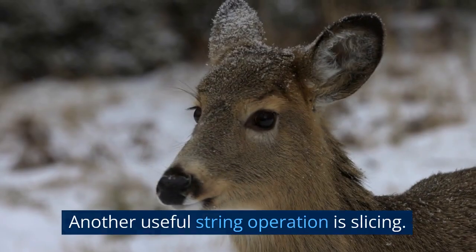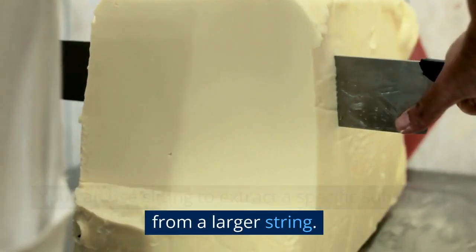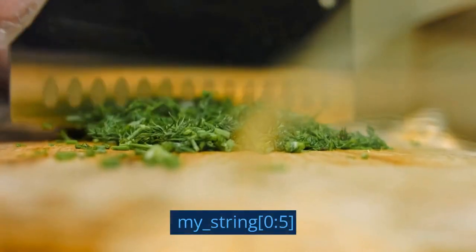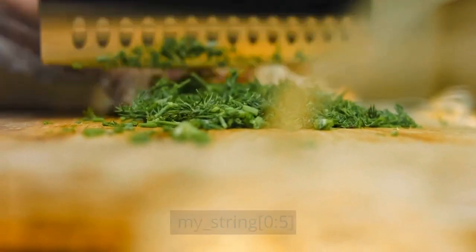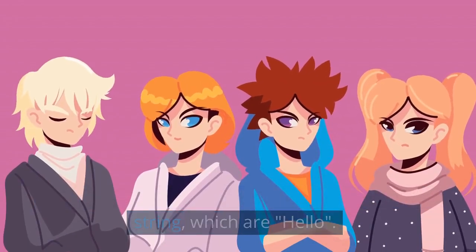Another useful string operation is slicing. You can use slicing to extract a specific substring from a larger string. For example, if you type my_string[0:5], Python will return the first five characters of the string, which are Hello.